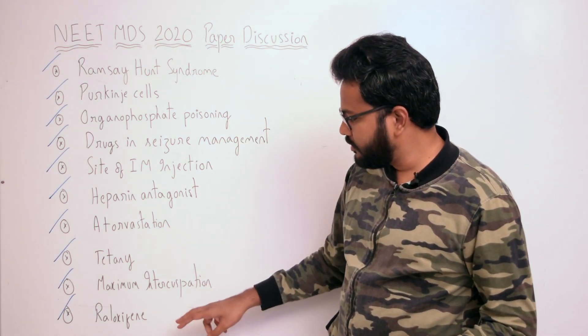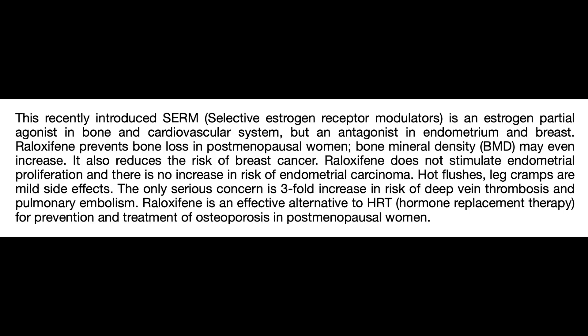Finally, raloxifene. It is a recently introduced selective estrogen receptor modulator — an estrogen partial agonist in bone and the cardiovascular system, but an antagonist in the endometrium and breast. Raloxifene prevents bone loss in postmenopausal women and bone mineral density may even increase. It also reduces the risk of breast cancer. It does not stimulate endometrial proliferation, so there is no increased risk of endometrial carcinoma. Hot flushes and leg cramps are mild side effects.